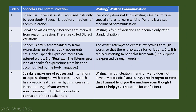Speech is universal as it is acquired naturally by everybody. Speech is an auditory medium of communication. Everybody does not know writing. Everyone has to take special efforts to learn writing. Writing is a visual medium of communication.